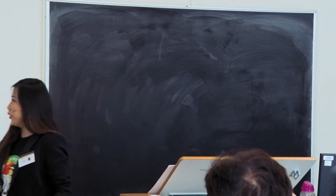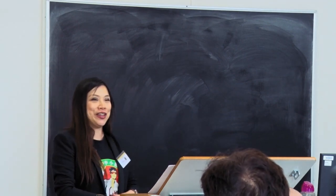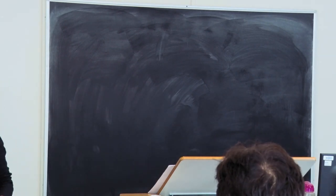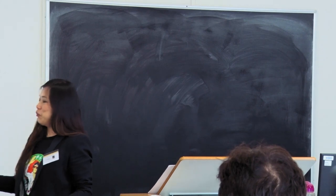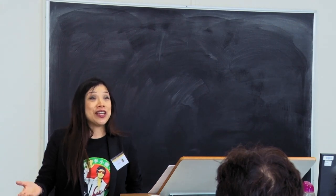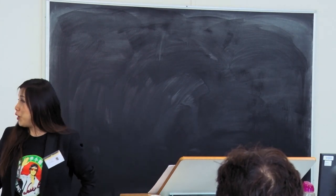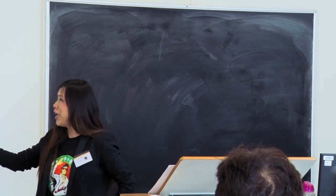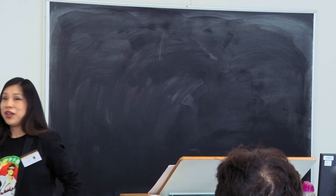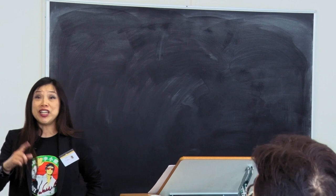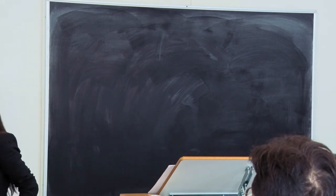Don Draper, a fictitious character from Mad Men, defined advertising in season one, episode one. He said advertising is based on one thing: happiness. Happiness is the smell of a new car, it's freedom from fear, it's a billboard that screams reassurance that whatever you're doing is okay.